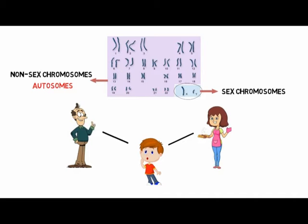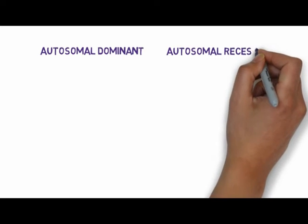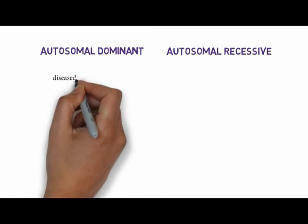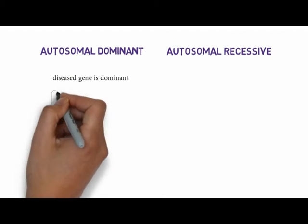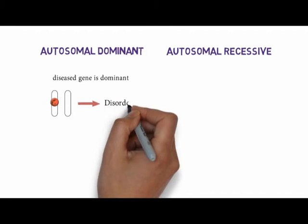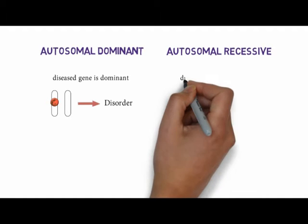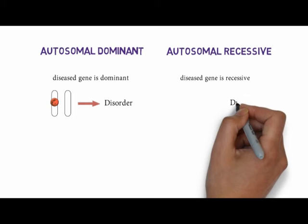There are two types of inheritance patterns: autosomal dominant and autosomal recessive, in which there is a single gene abnormality or disease on the autosome. In autosomal dominant, the disease gene is dominant over the normal gene, so a single disease gene is sufficient to produce autosomal dominant disorders.